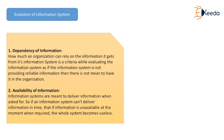1. Dependency of Information: How much an organization can rely on information it gets from its information system is a criteria while evaluating the information system, as if the information system is not providing reliable information then there is no need to have it in an organization.